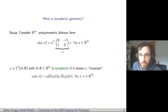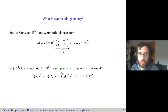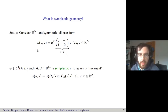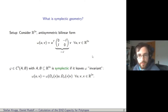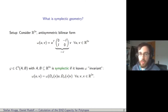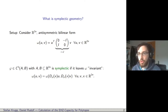What is symplectic geometry? In symplectic geometry, we consider Euclidean space of even dimension R to the power 2n, and we equip it with an anti-symmetric bilinear form. You can see that it's anti-symmetric because the matrix J that defines the bilinear form is anti-symmetric. Keep this matrix J in mind — it will come up a couple of times. This bilinear form is referred to as the standard symplectic form, and it provides the Euclidean space with a structure we study in symplectic geometry.